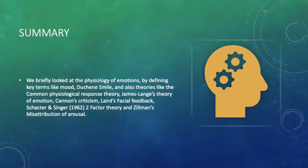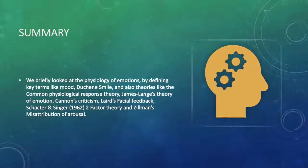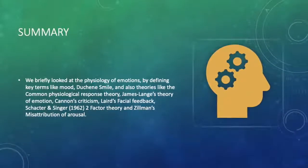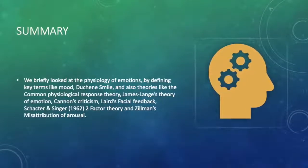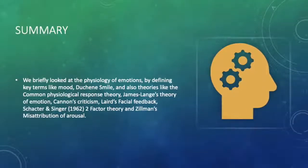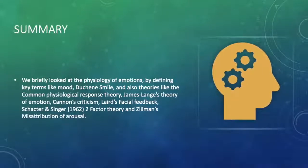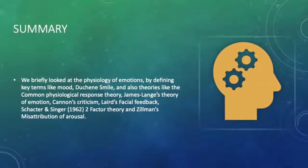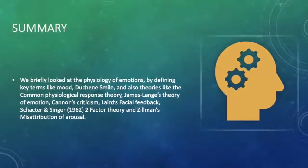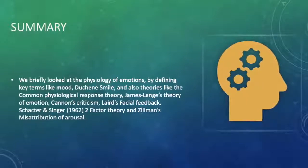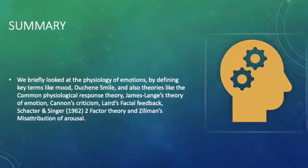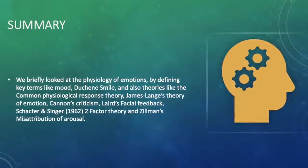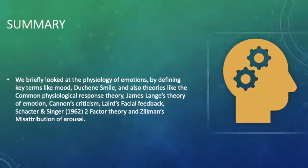In summary, we briefly looked at the physiology of emotions by defining key terms like mood and Duchenne smile, and we also looked at theories like the common physiological response theory, James-Lange's theory of emotion, Cannon's criticism, Laird's facial feedback, Schachter and Singer's 1962 two-factor theory model, and Zillmann's misattribution of arousal. Thanks for watching.